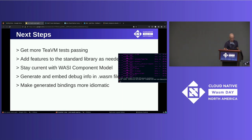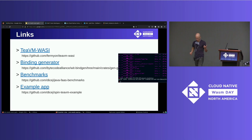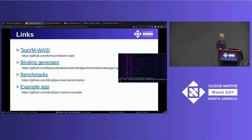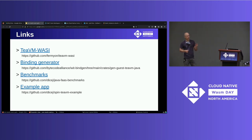Thank you. So that's about it — that was the demo. There's going to be a link here with all the resources: the benchmarks are available in a repository, as well as the demo application and a few other resources — the link to the Java binding generator in wit-bindgen, and TeaVM-WASI. I should note: TeaVM-WASI is a friendly fork of upstream TeaVM. We have a PR open for upstream, though it's not clear it fits the mission of TeaVM as the lead maintainers see it, so we may maintain a parallel fork going forward.